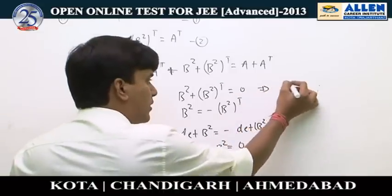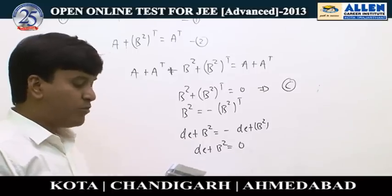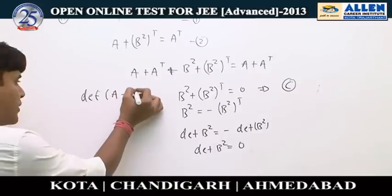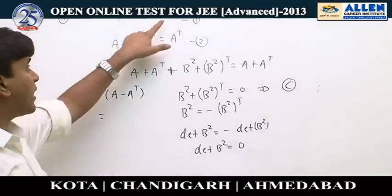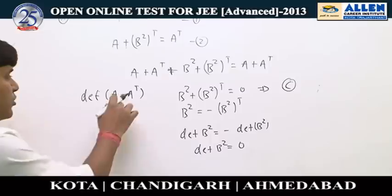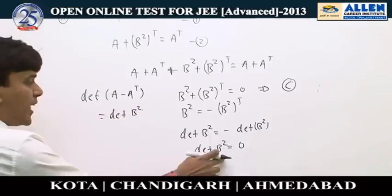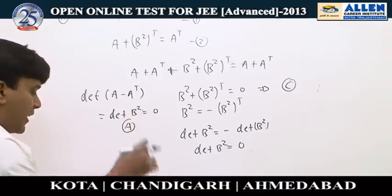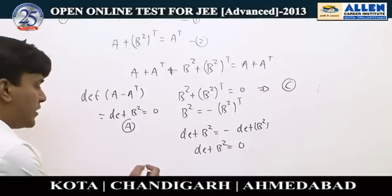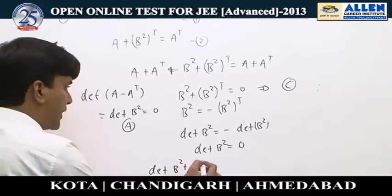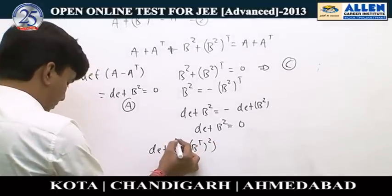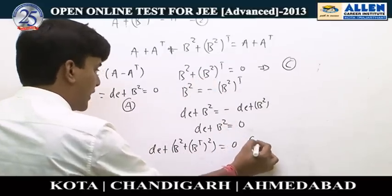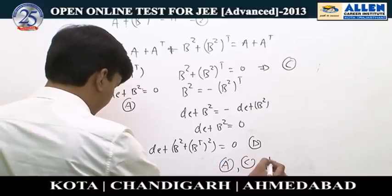This confirms option C is correct. For option A, from equation 1, A minus A transpose equals B², so det(A minus A transpose) equals det(B²) equals 0, confirming option A. For option D, det(B² plus B² transpose)² equals 0 from the null matrix result, confirming option D as well. The correct answers are A, C, and D.